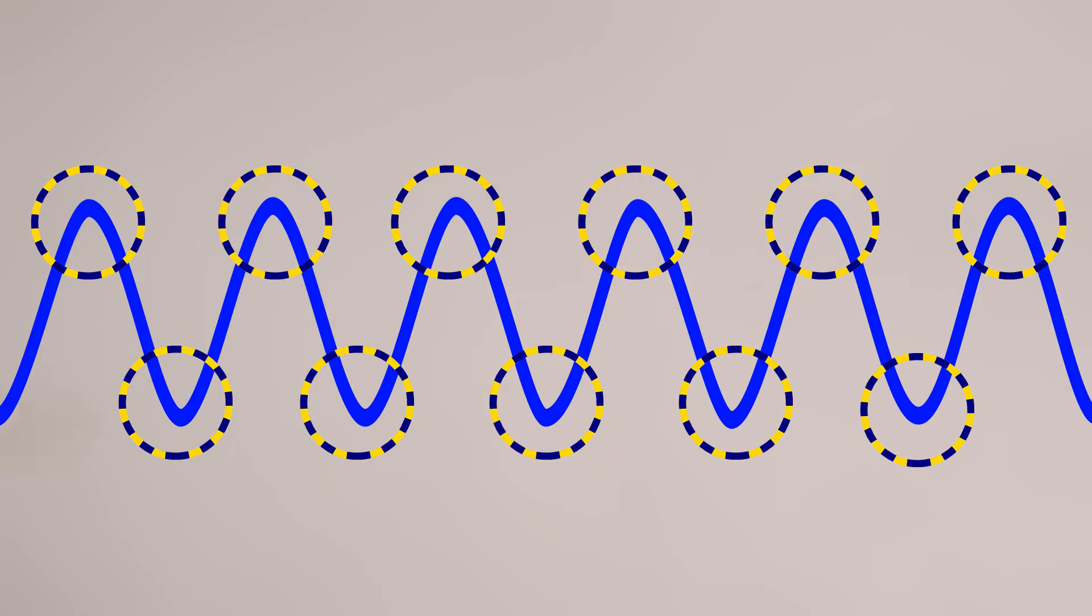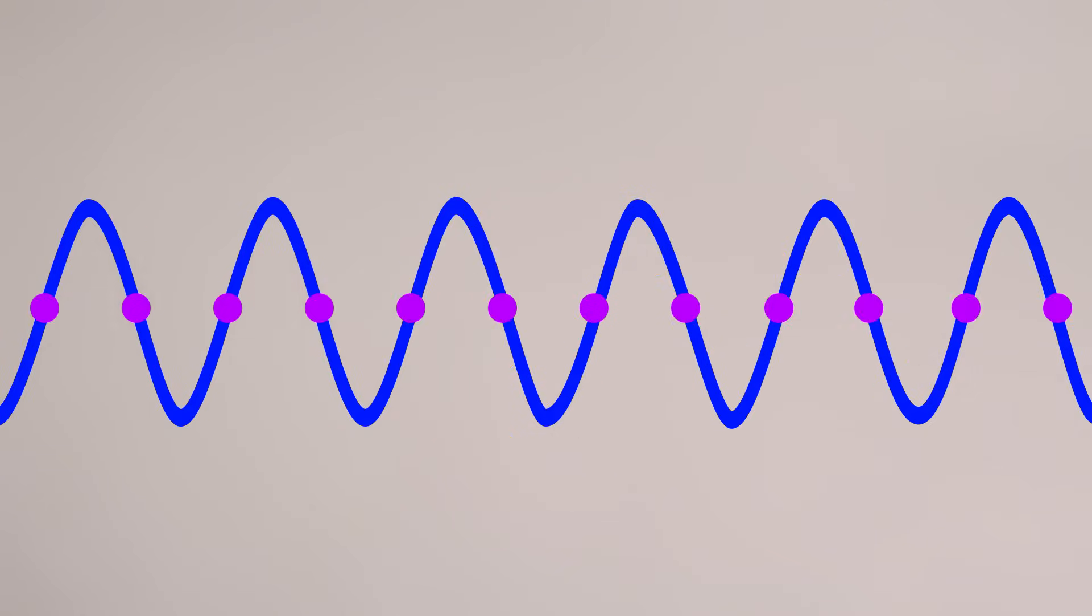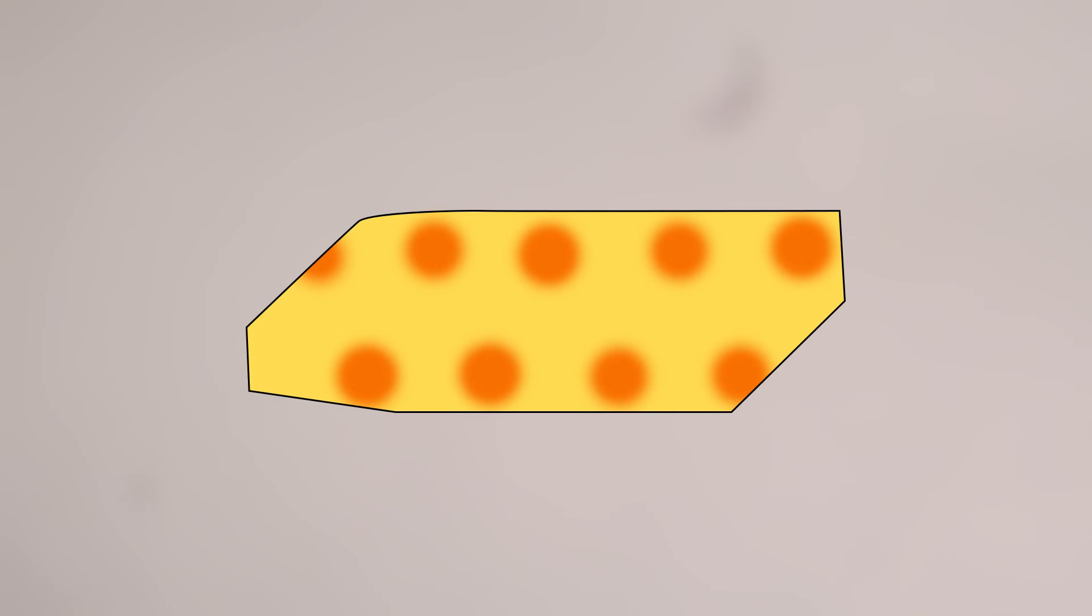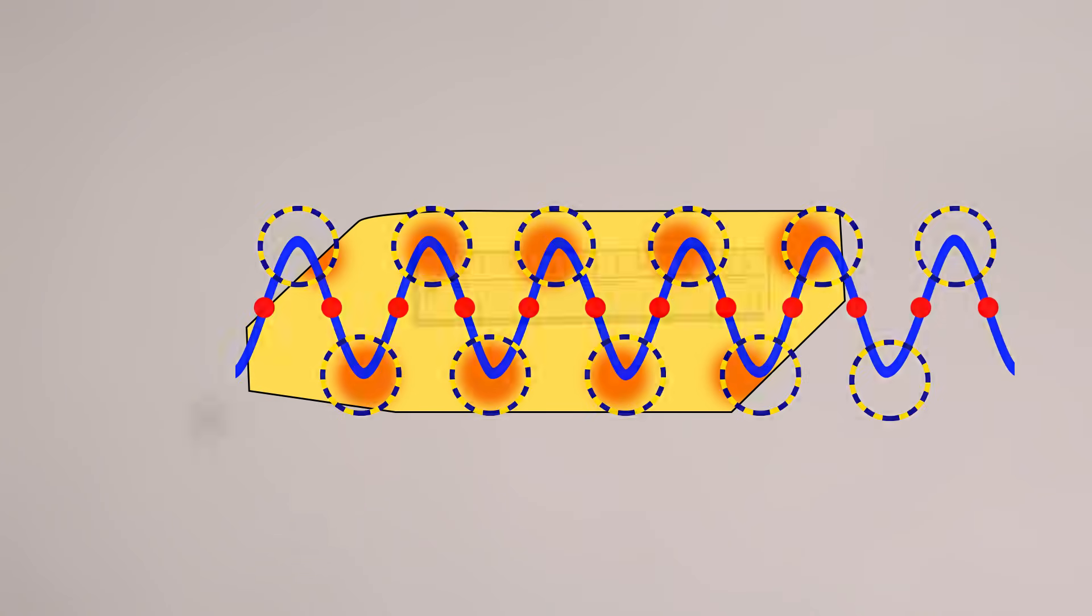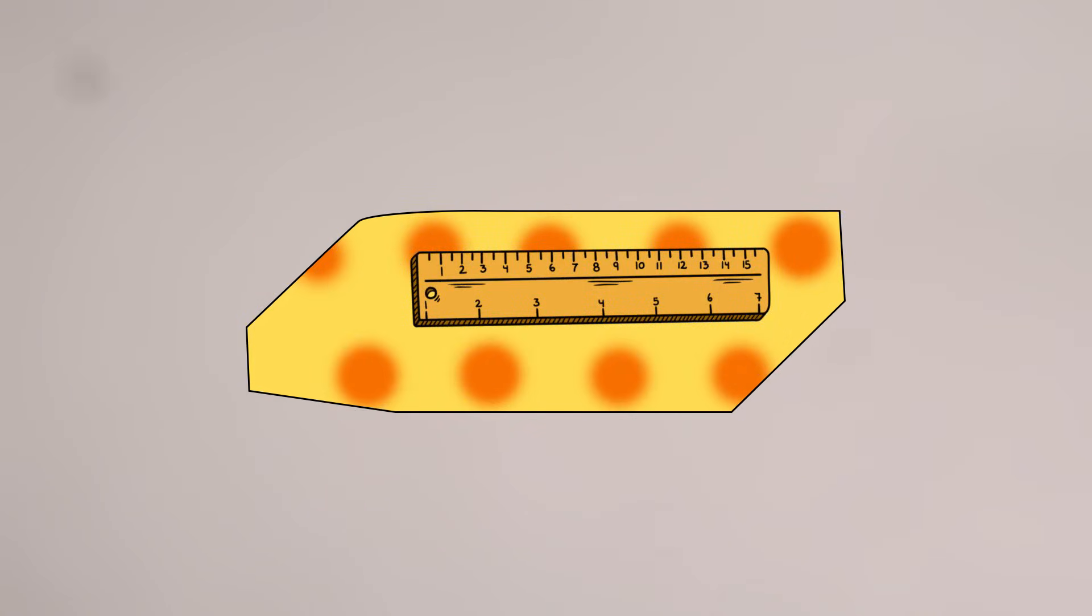The butter melted most where the peaks and valleys of the waves are, and remained solid at the nodes. So this is basically a map of the waves. And by measuring the distance between the melting points, we can find out an approximation of the speed of light.